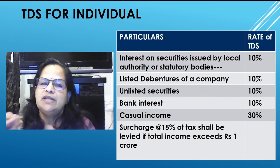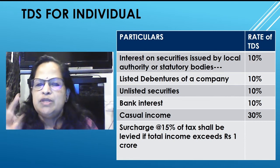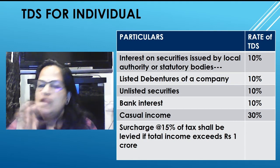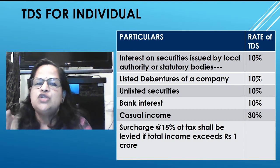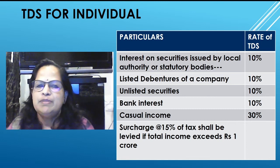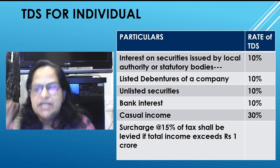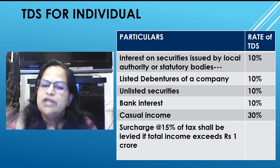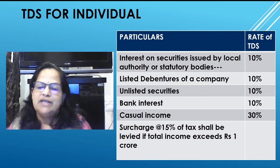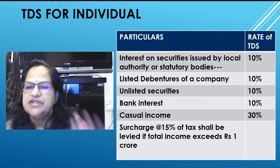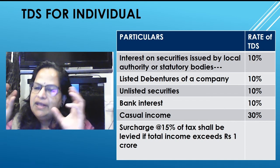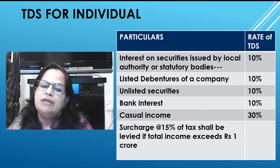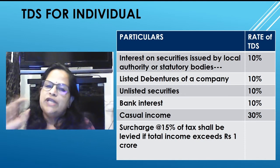TDS rates for individuals: remember two rates — 10 percent and 30 percent. Interest on securities issued by local authority or statutory bodies: 10%. Listed debentures of a company: 10%. Unlisted securities: 10%. Bank interest: 10% TDS. Casual income — lottery, crossword puzzles, horse races — 30%. Any interest or dividend: 10%; casual income: 30%.